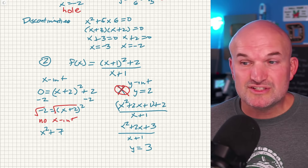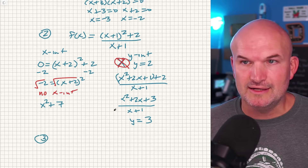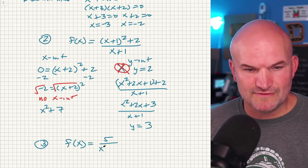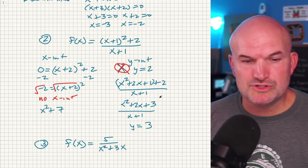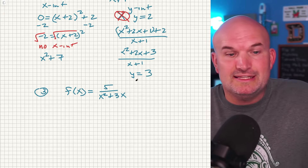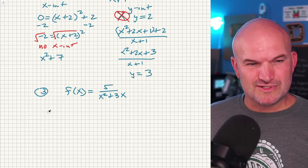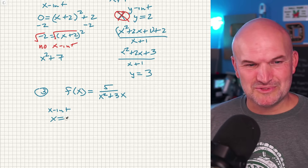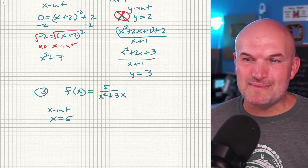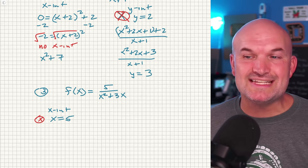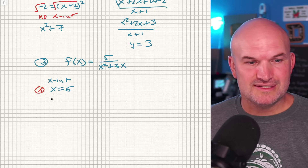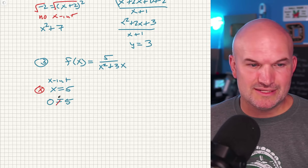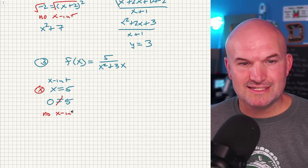The next mistake is simply going too fast. If I have a function where the numerator is (x²+3x) over something and there's a constant 5 in the numerator — students see the numerator and say, set it equal to zero, so x equals 5. No. Remember, we're setting the numerator equal to zero: 0 equals 5 is an incorrect statement. So there is no x-intercept.